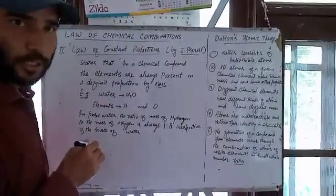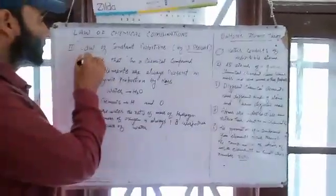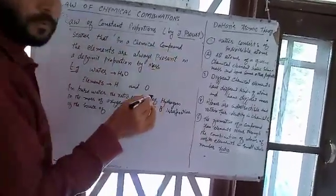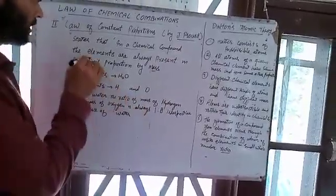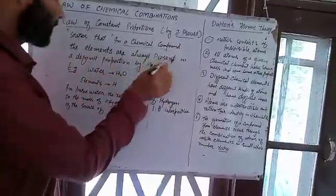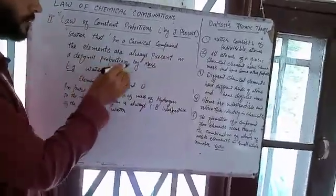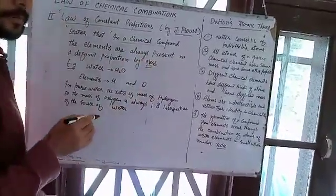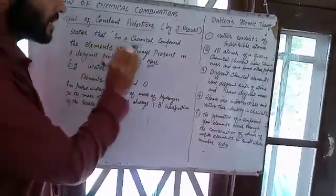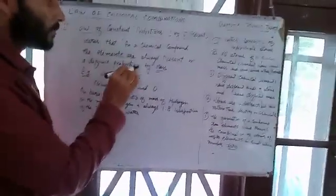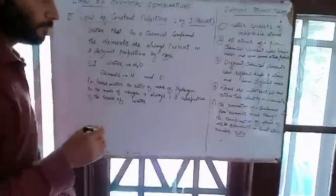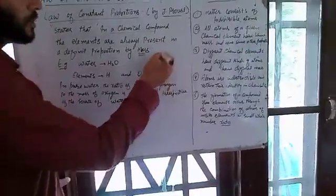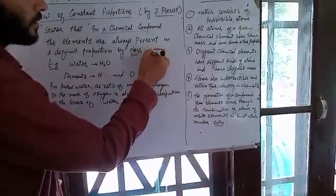The law of constant proportions states that in a chemical compound, the elements are always present in a definite proportion by mass. This is the important statement. Irrespective of the source of the element, the proportions remain constant.